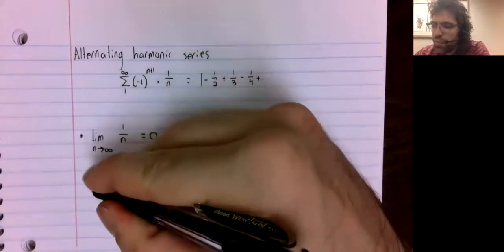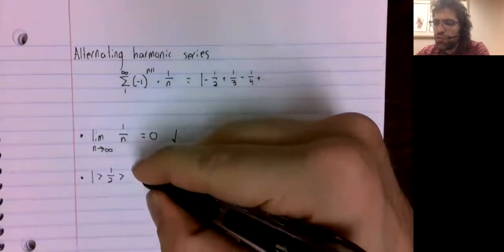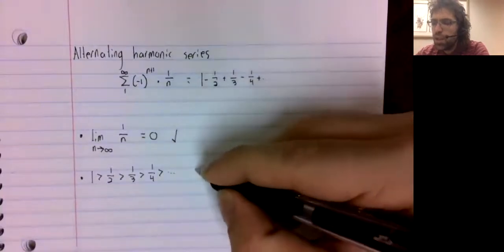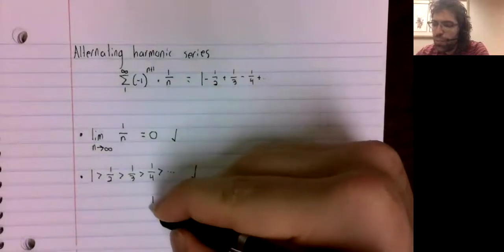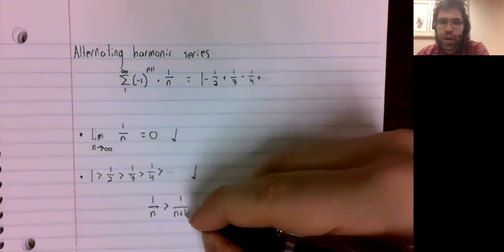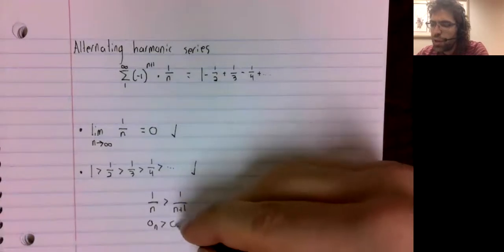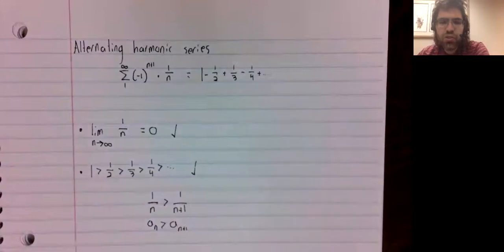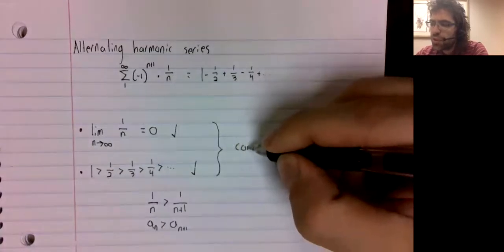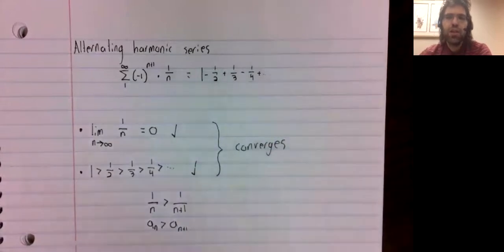And we need the first term of the series to be greater than the second, to be greater than the third, to be greater than the fourth. And we do have that. 1 over n is greater than 1 over n plus 1 — that is to say, a sub n is greater than a sub n plus 1 always. And that is all we need to say that the series converges.